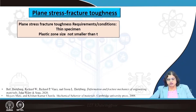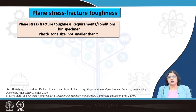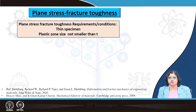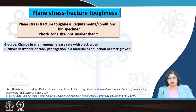For plane stress fracture toughness testing, thin specimens are used. This approach is valid when the plastic zone size is not smaller than the specimen thickness — it may be equivalent to or even larger than the thickness — meaning the plane strain condition no longer holds. The approach employs the interaction between the G curve and the R curve.